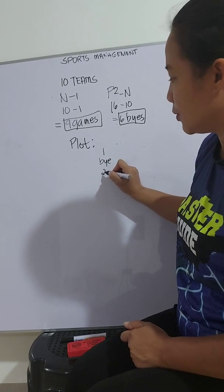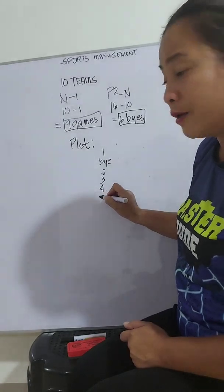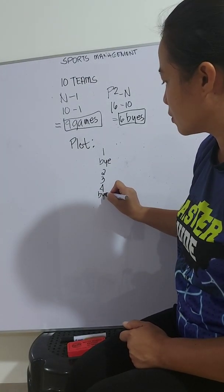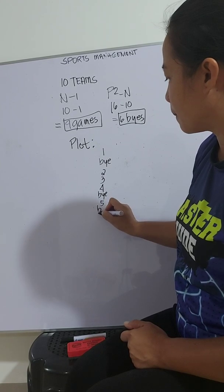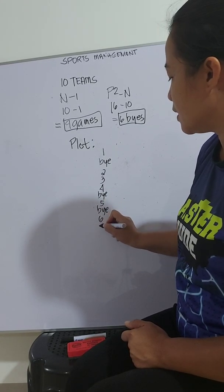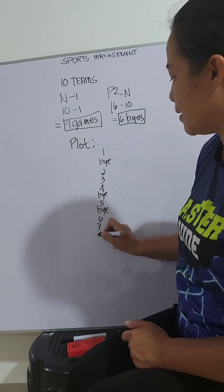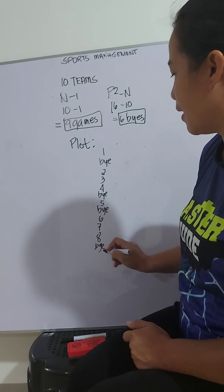Team 2, not. Team 3, team 4, one of those. Team 5, bye. Team 6, 7, team. Team 8, bye.